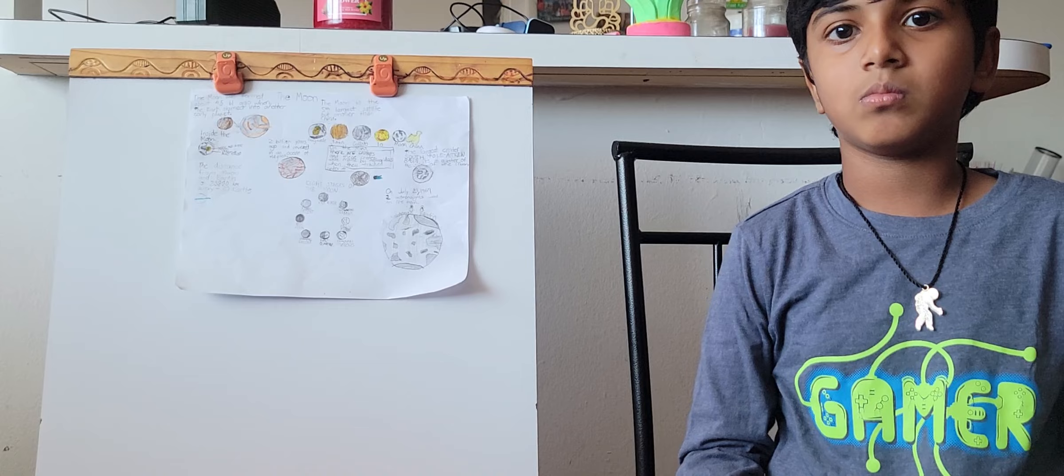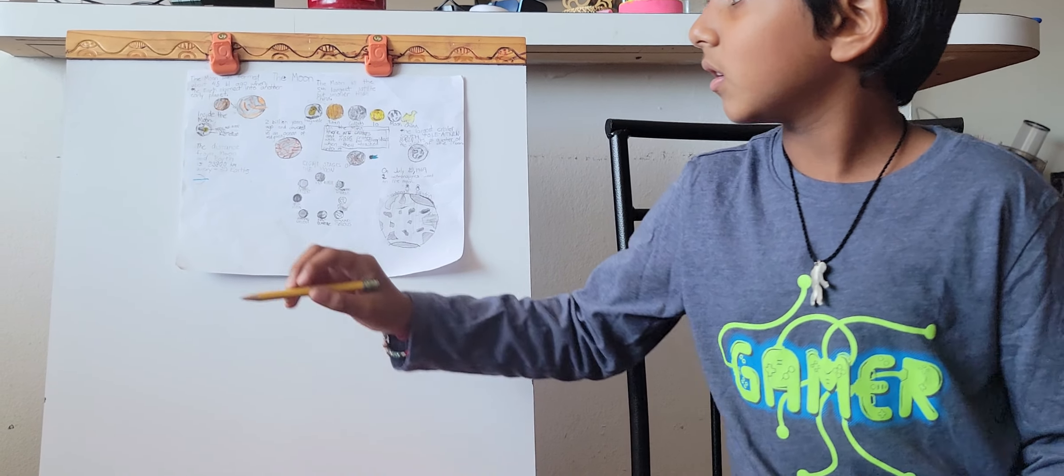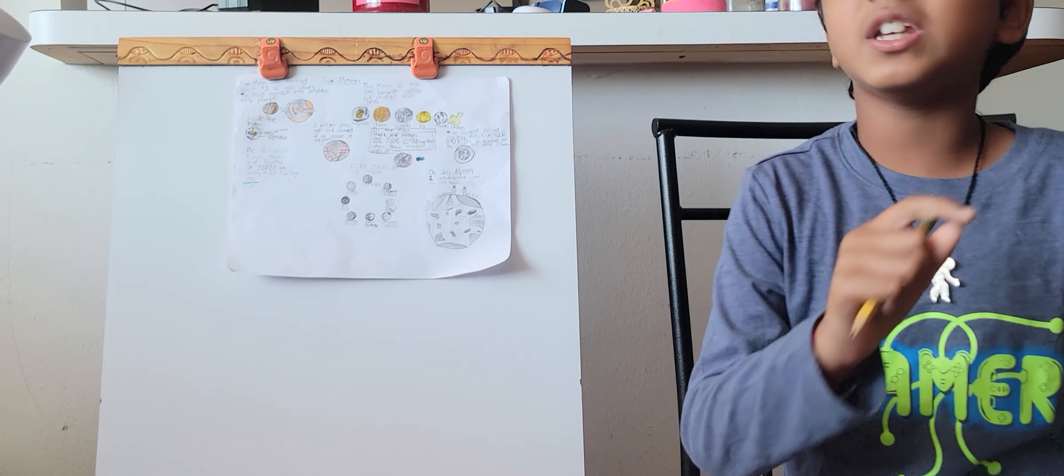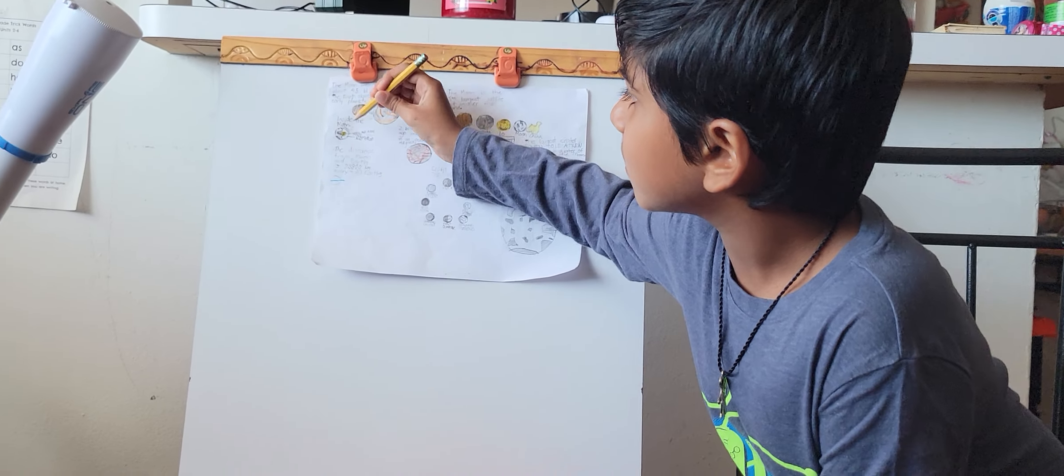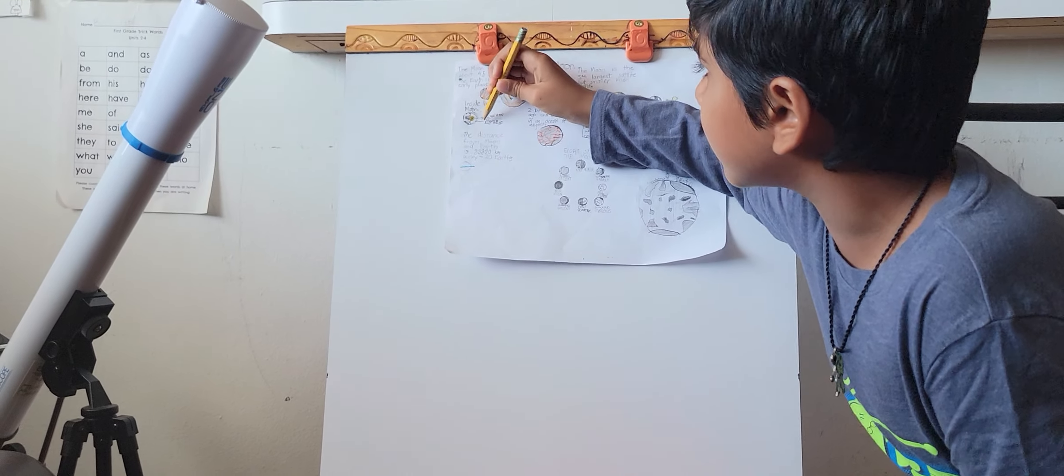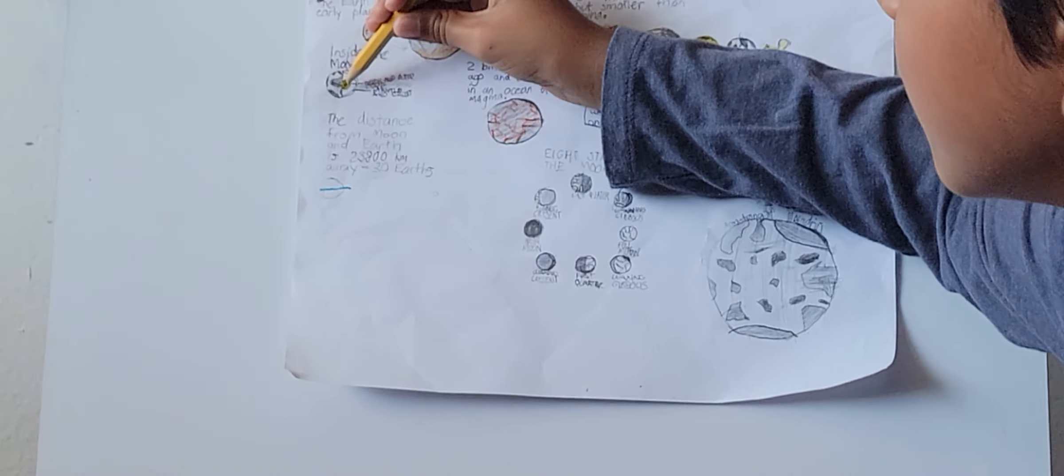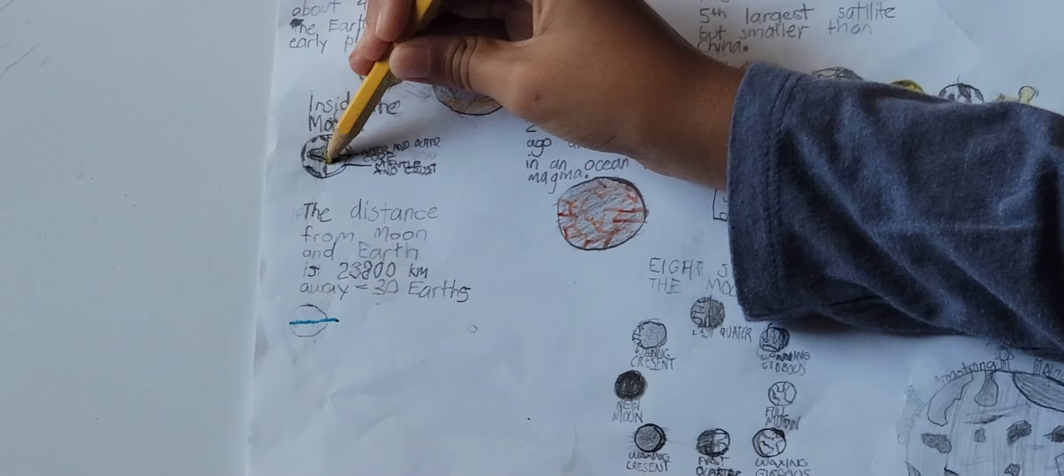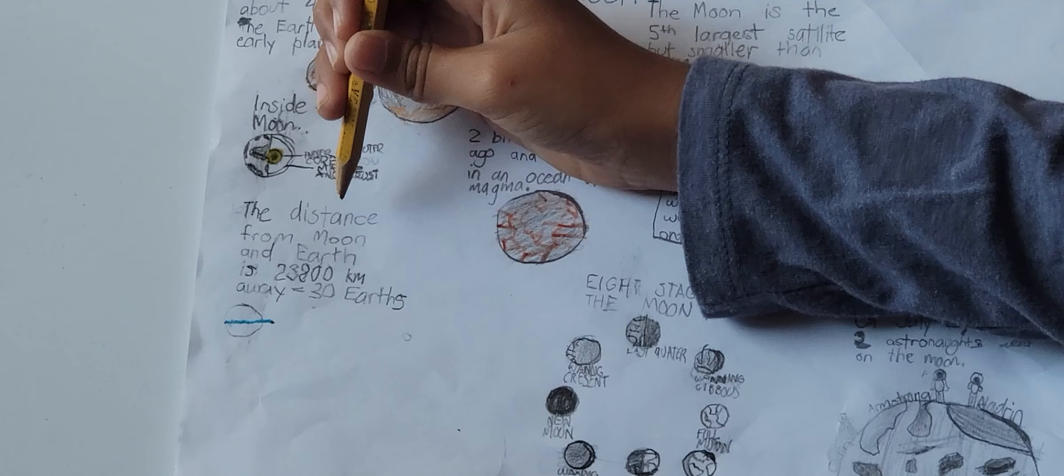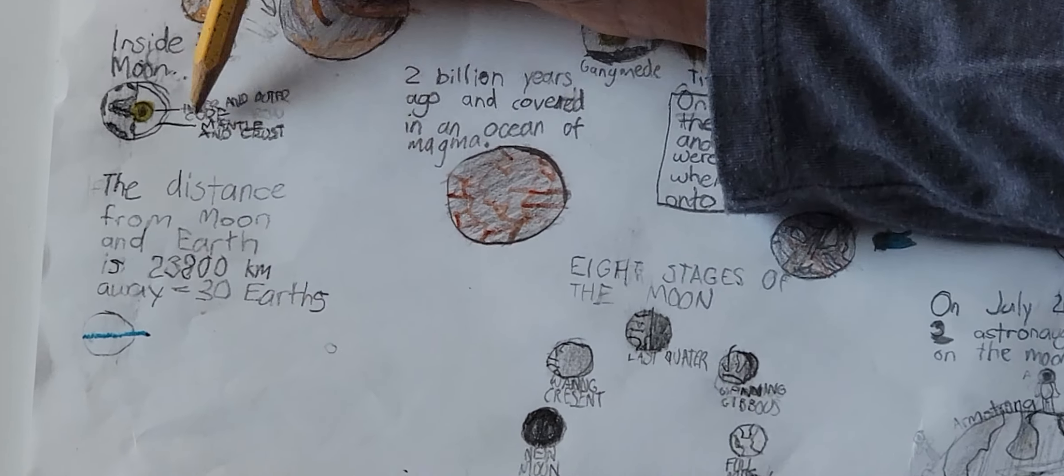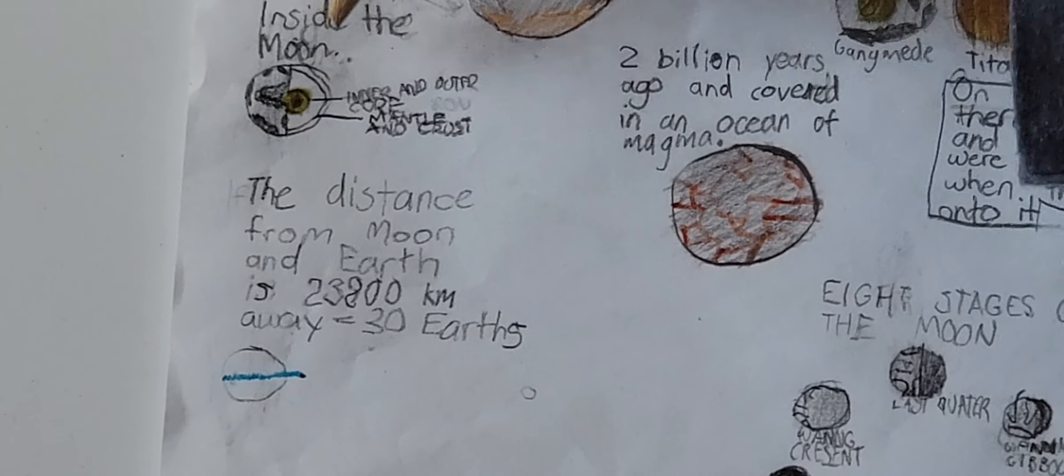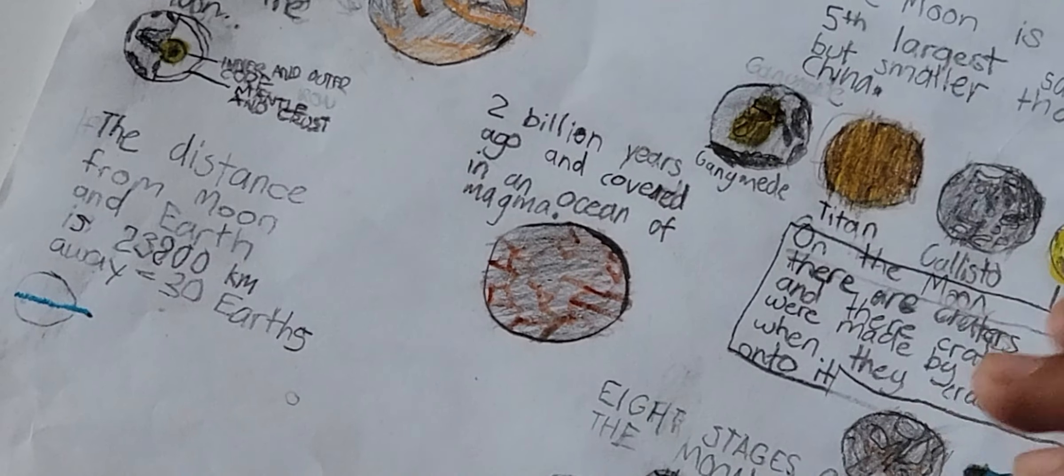So now we're going to see what is inside the moon. Inside it you can see an inner and outer core, it's right in the center. And then there's a mantle and a crust. You see the outer part, that's a mountain in the crust.